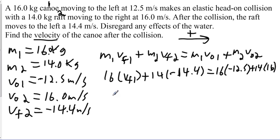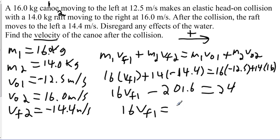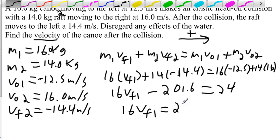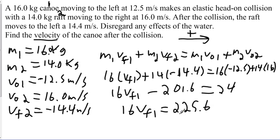And so when you start to work this out, you should get this part of the raft is equal to 24, and we get negative 201.6, and we get 16 vf1. So 16 vf1 is equal to 225.6. So that must mean our vf1 is equal to 14.1 meters per second. And there you go.